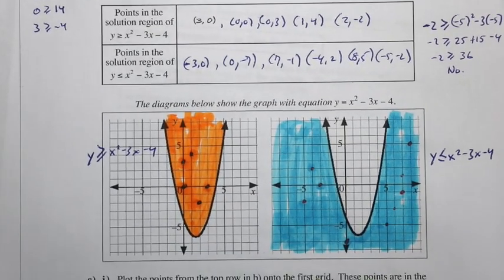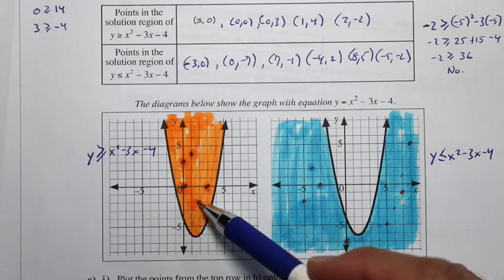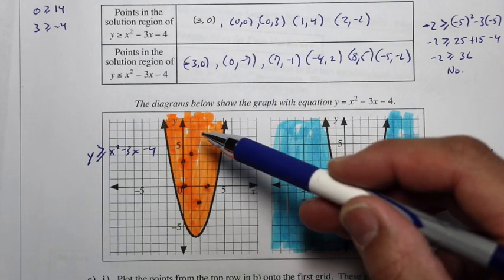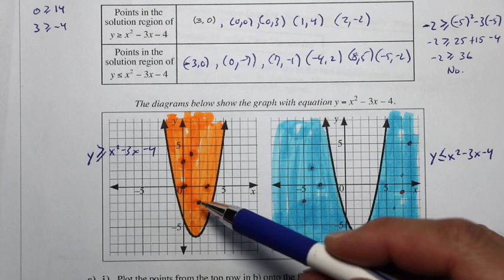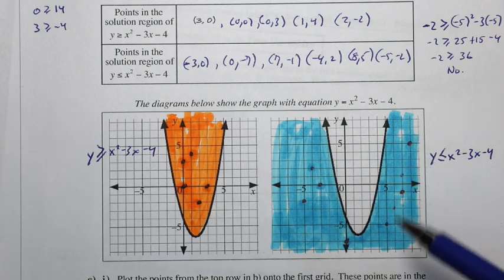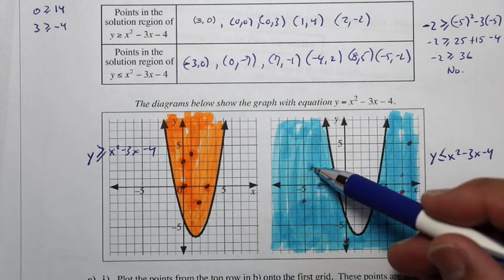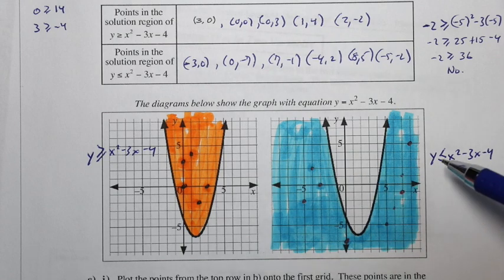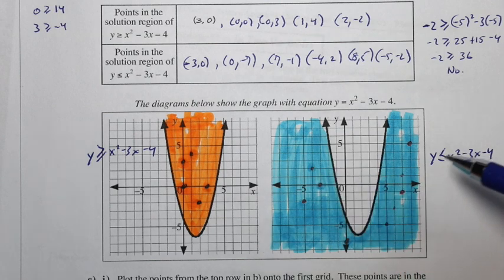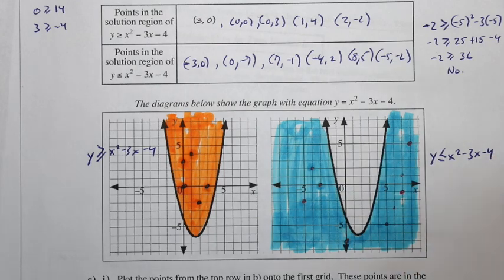We only have to test a point once. Once we find the test point satisfies the solution, we just shade that area. If the point we chose did not satisfy, then we just shade the other side — provided our math was correct.